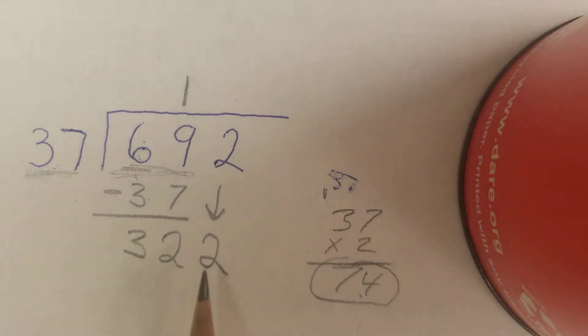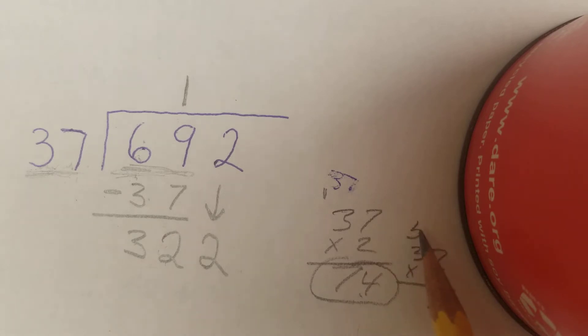So now we have 322. How many times will 37 go into that? I know that 37 times 10 is 370, and that's too much. So I'm thinking it's probably going to be 8 or 9. I'll write off to the side here, 37 times 8. 8 times 7 is 56. 8 times 3 is 24, plus 5 is 29. So that's 296.